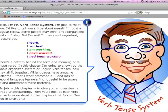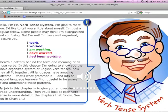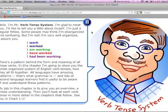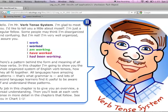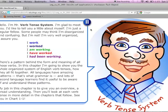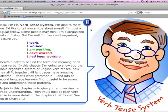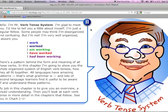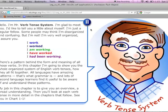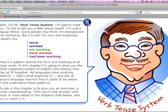Let's listen to this. "Hello, I'm Mr. Verb Tense System. I'm glad to meet you. I'd like to tell you a little about myself. I'm just a regular fellow. Some people may think I'm disorganized and confusing, but I'm not. I'm very well organized, I assure you. I work, I worked, I am working, I have worked, I had been working. There's a pattern behind the form and meaning of all those verbs."